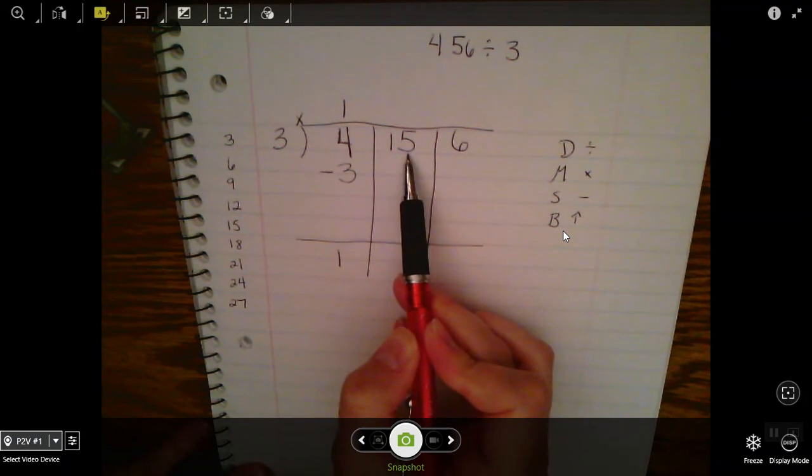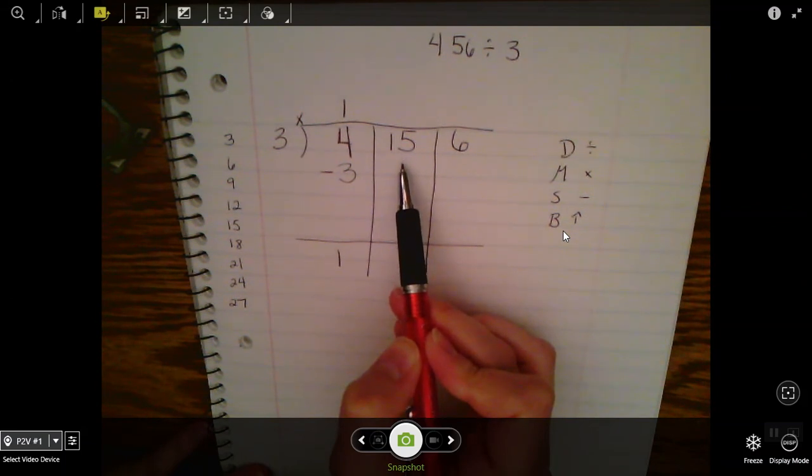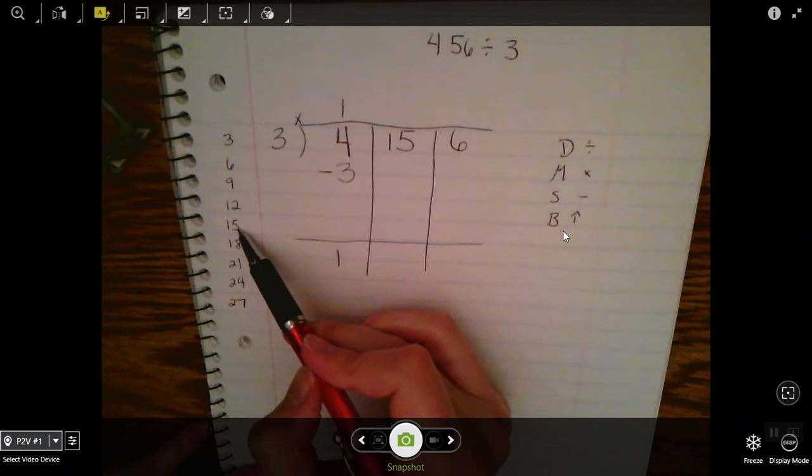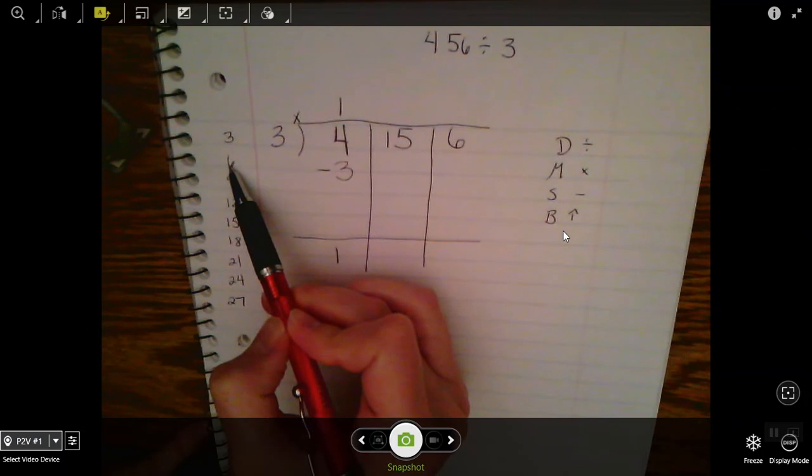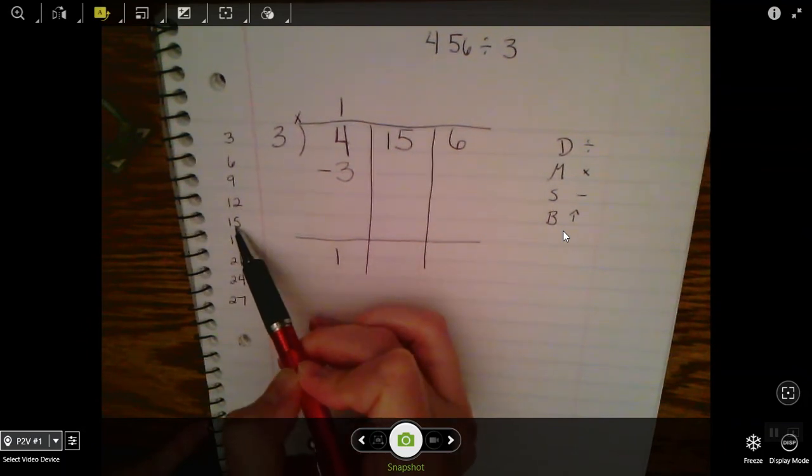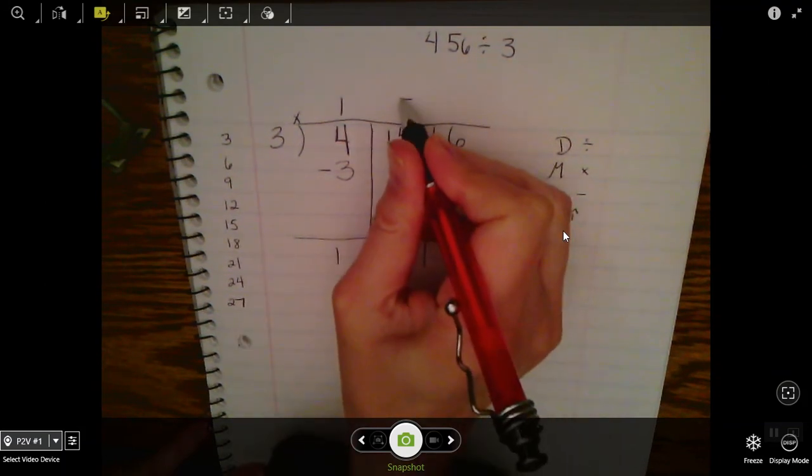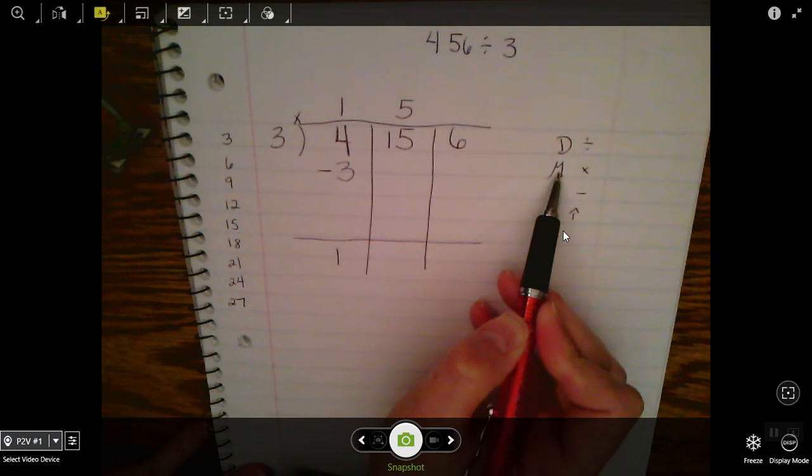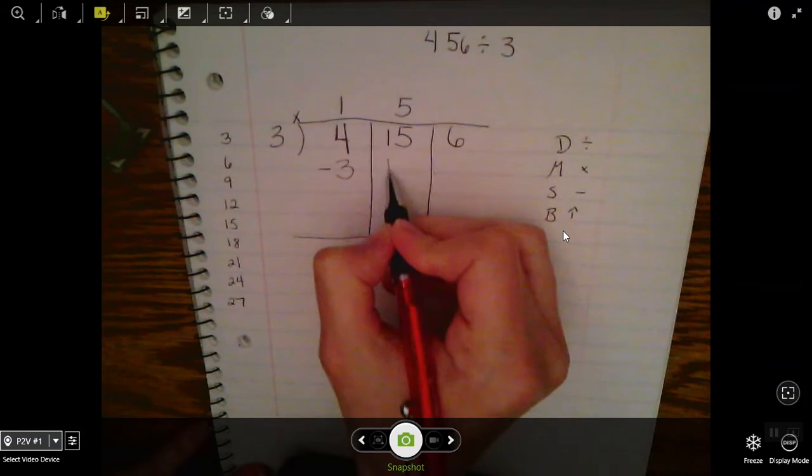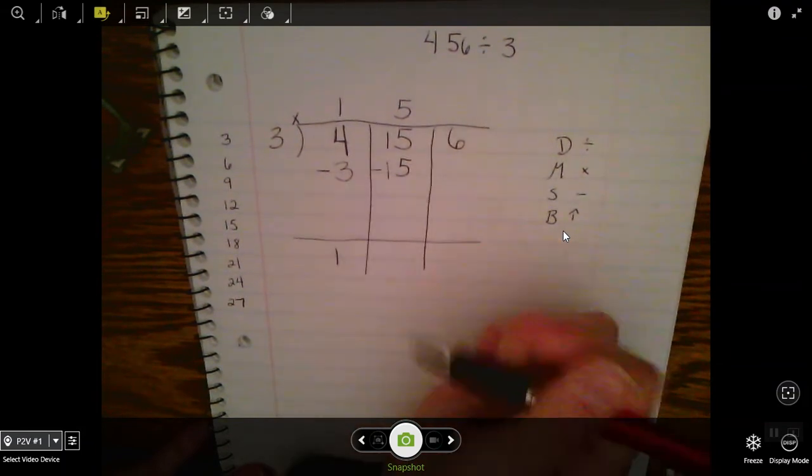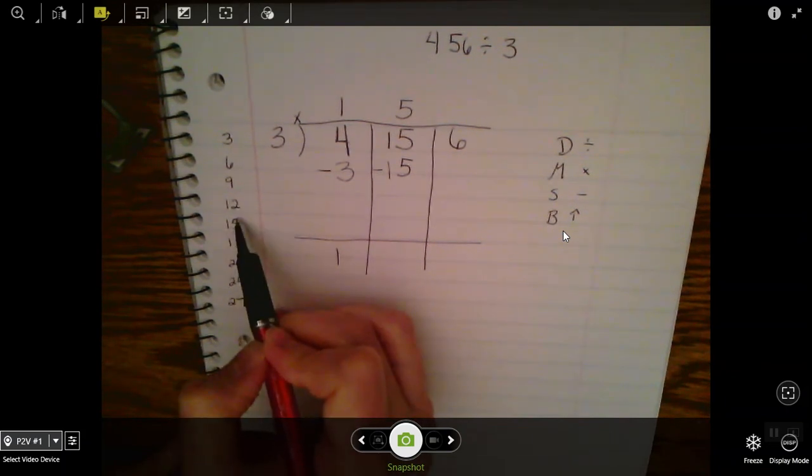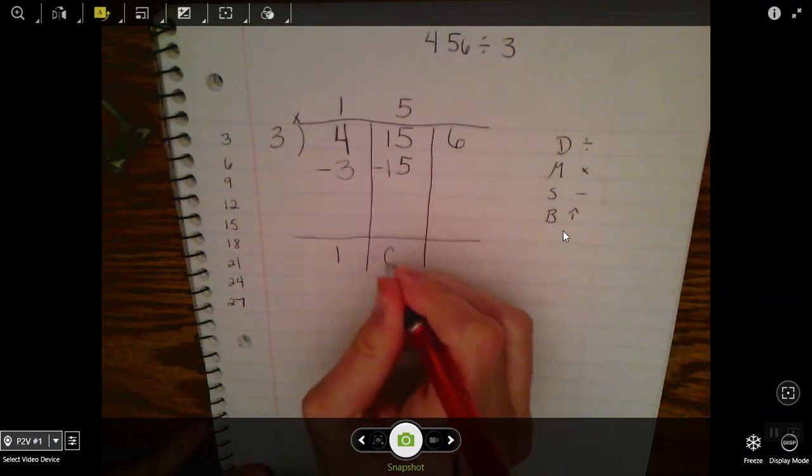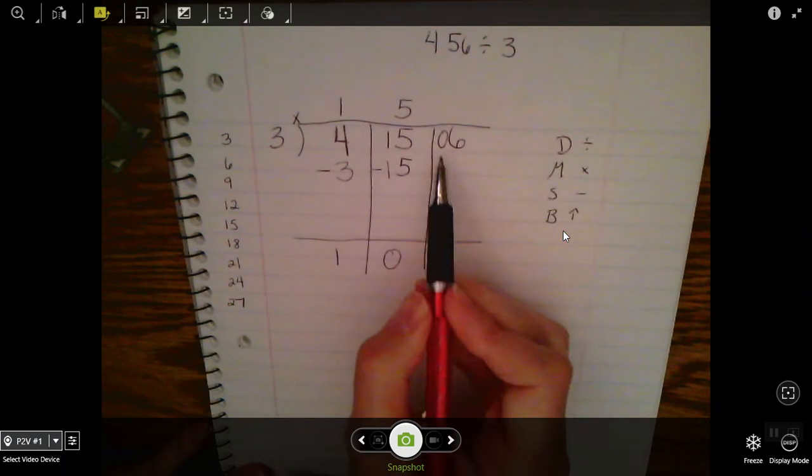Now I'm going to move on to the second row, which is 15. I want to see how many times 3 can go into 15. I see 15 over here on the side—that's 5 threes. My 5 goes at the top. That was my divide step: 3 went into 15 five times. Next I multiply: 3×5 is 15. Subtract: 15-15 is 0. I bring up my 0, and I'm left with 6.